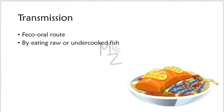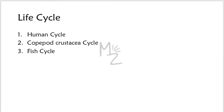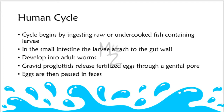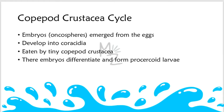Life cycle of Diphyllobothrium has three stages: the human cycle, the copepod crustacea cycle, and the fish cycle. The human cycle begins by ingesting raw or undercooked fish containing larvae. In the small intestine the larvae attach to the gut wall and develop into adult worms. The gravid proglottids release fertilized eggs through a genital pore and the eggs are passed in the feces. The immature eggs must be deposited in freshwater for the life cycle to continue. The embryos (onchospheres) emerge from the eggs, develop into coracidia, and these coracidia are eaten by the tiny copepod crustacea, the first intermediate host.